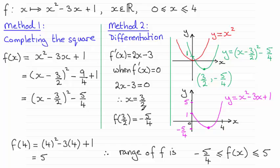You can locate that minimum point of minus 5 upon 4 by using my second method, differentiation. Just differentiate f of x here and you get 2x minus 3. Put it equal to 0 because the gradient will be 0 at that minimum point.